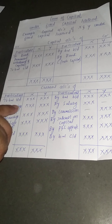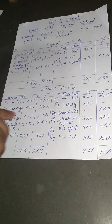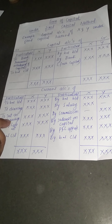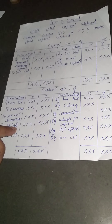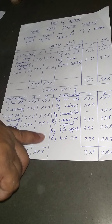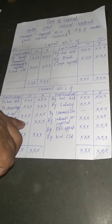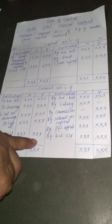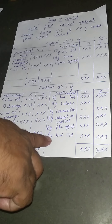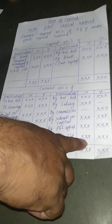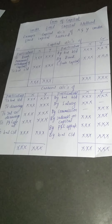On the debit side of the Current Account: drawings made during the year are debited, interest on drawings is debited, and if there is a loss from the P&L appropriation account it is debited to the partner's account. The total of the credit side minus the debit side gives the balance. If the debit balance exceeds the credit balance, it is carried forward on the credit side, meaning the current account is showing a deficit.